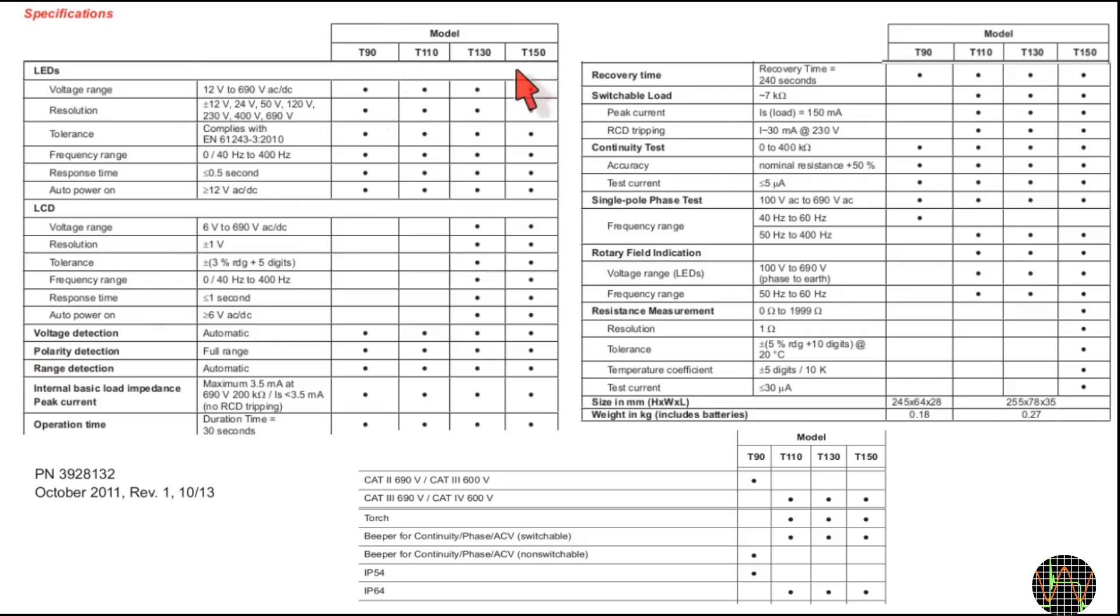The high-end models, T130 and T150, have an additional three-digit LCD display to read voltages and frequency, but as you can see, the resolution and accuracy is rather limited. The same is true with the additional resistance measurement offered by the T150 model.